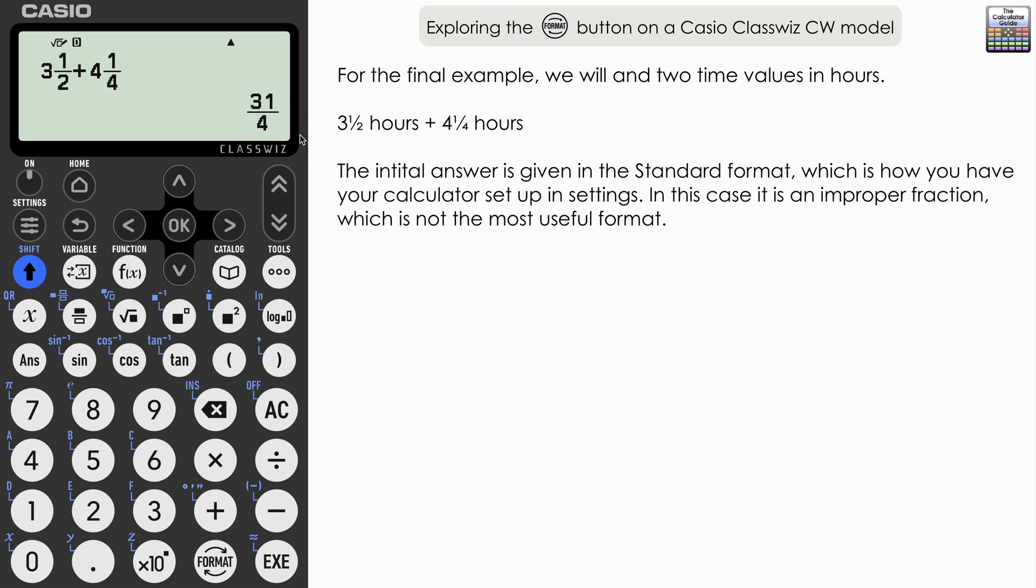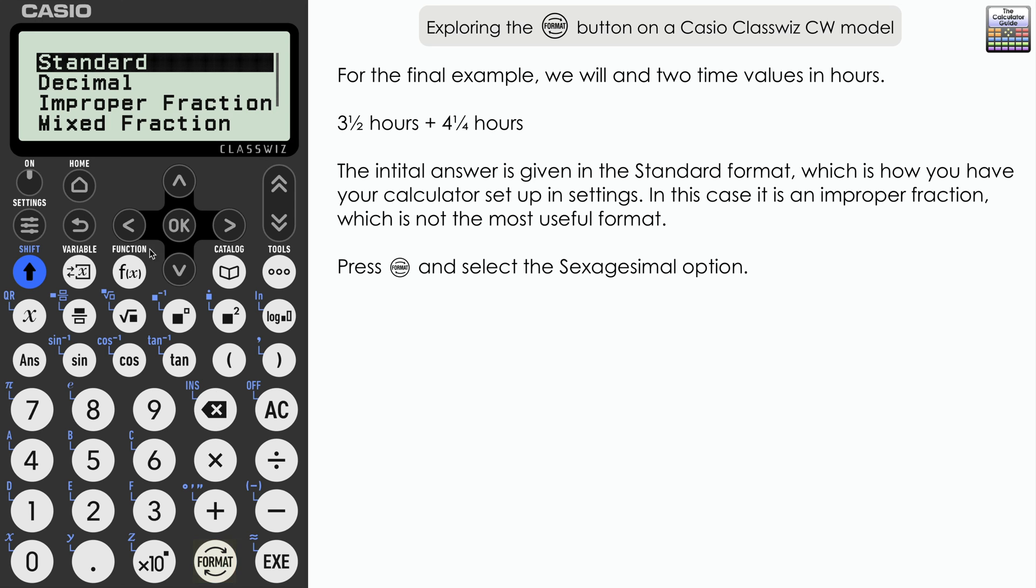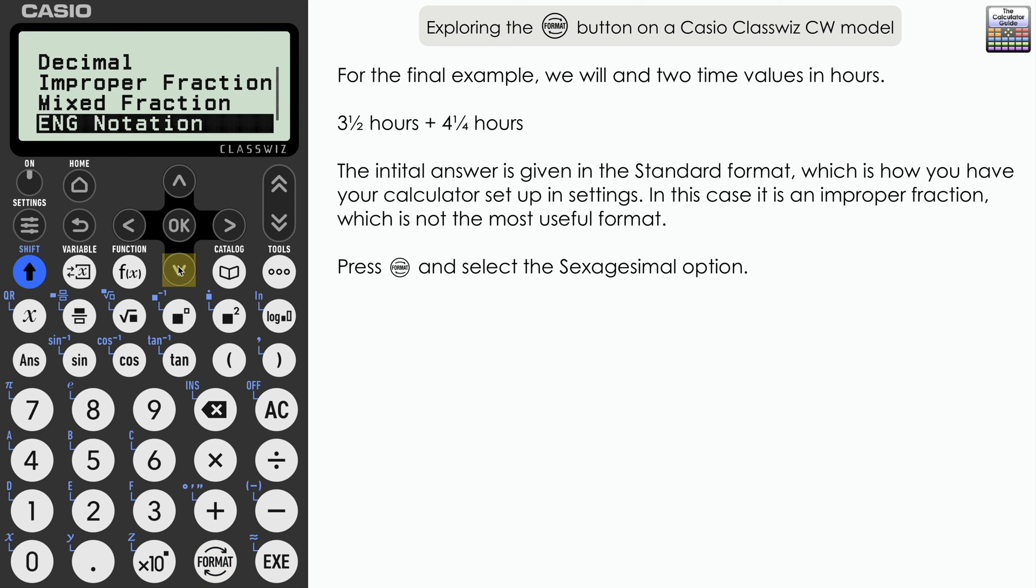Remember, that's how my calculator is set up. But that doesn't necessarily mean anything in terms of time 31 over 4, 31 quarters of an hour. So to give it a bit more context, what we can do is to go to format and then select the sexagesimal display. And if you select that, we can see displayed here.